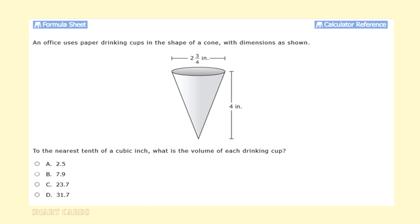An office uses paper drinking cups in the shape of a cone with the dimensions as shown. To the nearest tenth of a cubic inch, what is the volume of each drinking cup? Let's look at the four signals in this problem. We need to know the volume of a cone formula, which is v equals pi times the radius squared times the height, all divided by three. We are given the diameter, which is two and three-quarters of an inch or 2.75 inches. We're going to take that diameter and convert it to a radius by dividing by two, which will give us 1.375 inches. And we need to know the height of the cone, which is four inches.